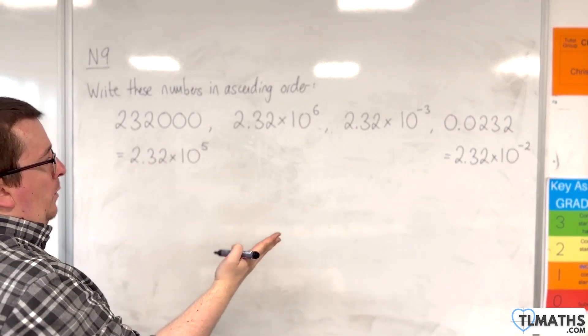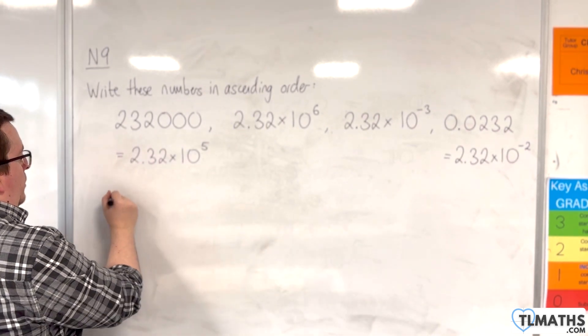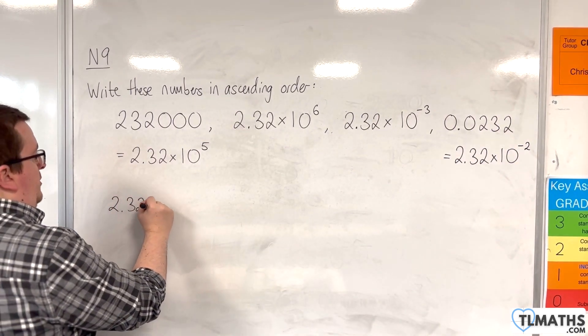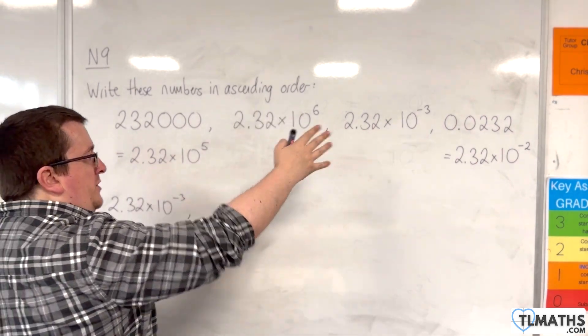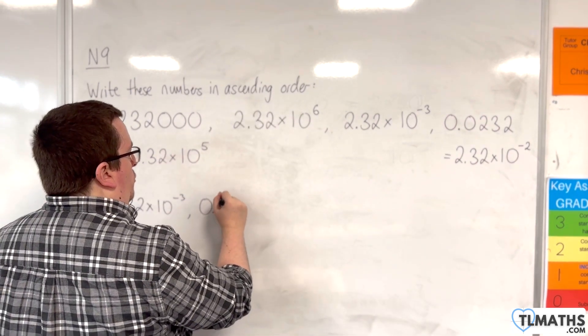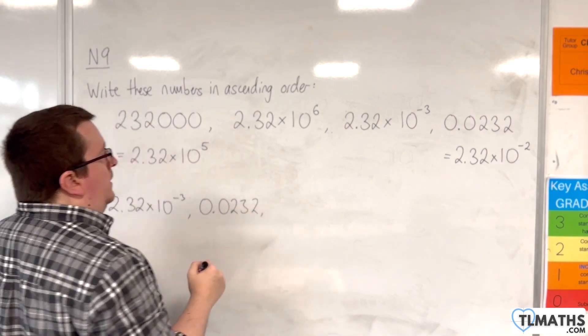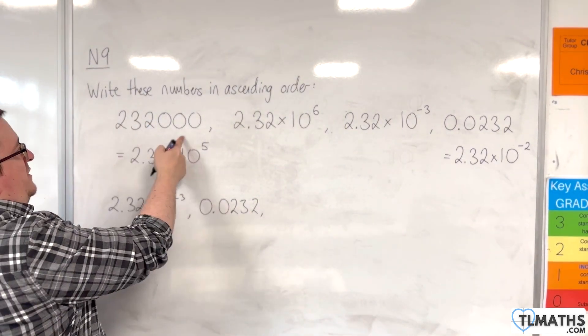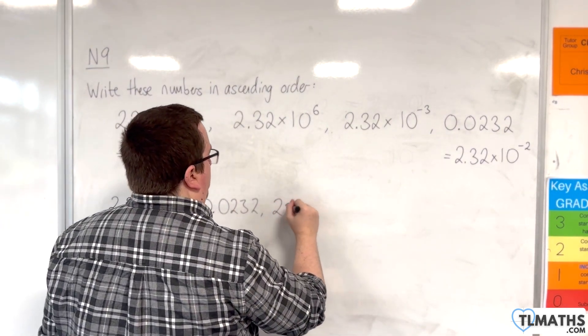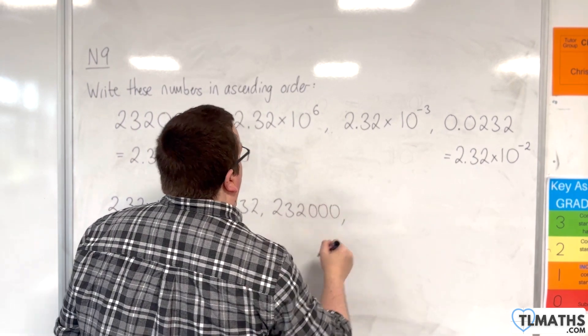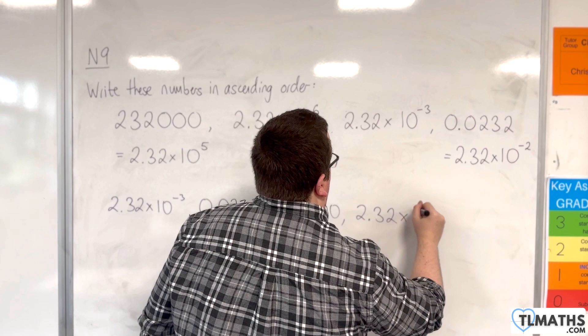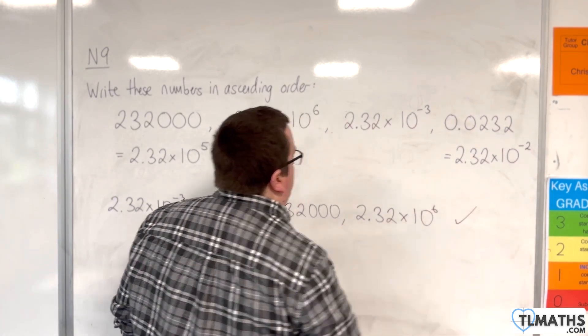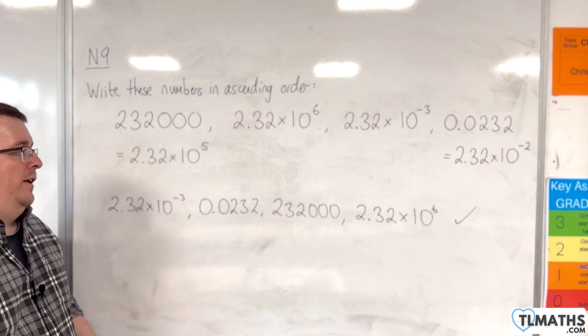So the smallest is 2.32 times 10 to the minus 3. The next largest is the 0.0232. The next largest is the 232,000, and then it's the 2.32 times 10 to the 6, and that is in the correct ascending order.